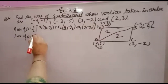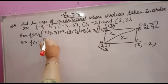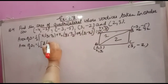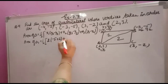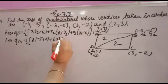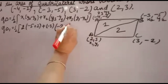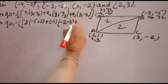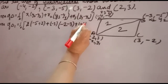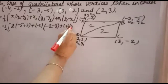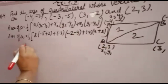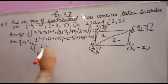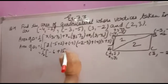For triangle 1, put the values: x1 is 2, y2 is -5, and y3 is -2, so minus of -2 becomes +2. x2 is -3, y3 is -2, y1 is -3. Then x3 is -4, y1 is 3, y2 is -5, so minus of -5 becomes +5. You get: half [2(-3) = -6, then -3(-5) = +15, and -4(8) = -32].